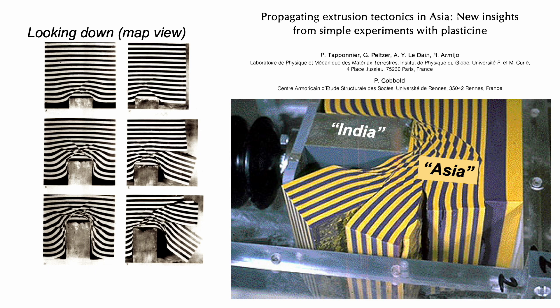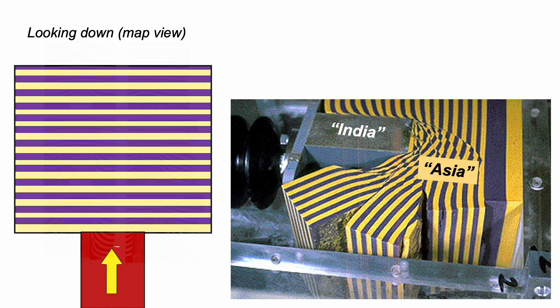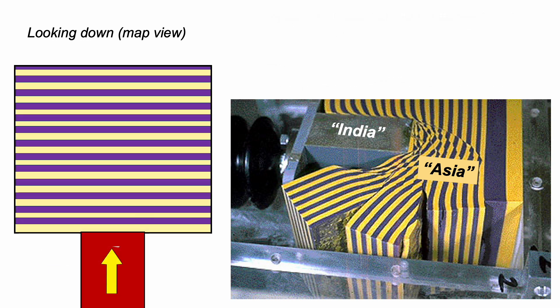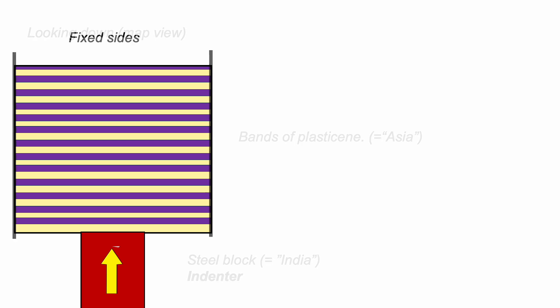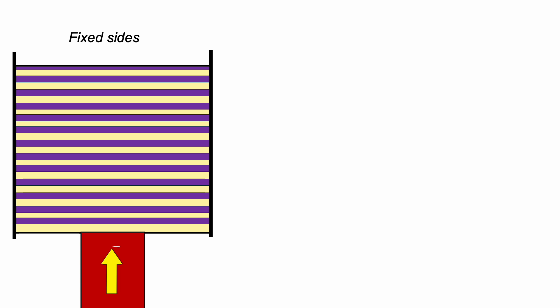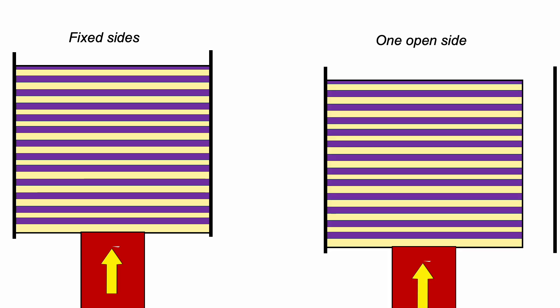In this view, we're looking straight down on the model. In one set of experiments, both sides — representing east and west of Tibet — are constrained. In the other, the eastern side is left open, reflecting the idea that the Asian continent is bounded to the east by ocean plates.